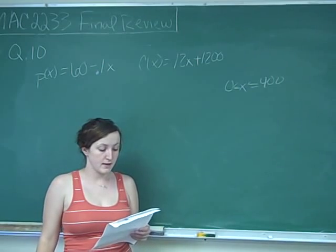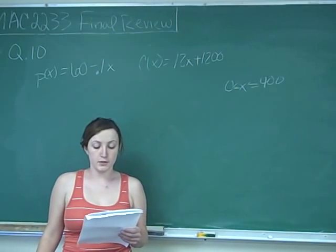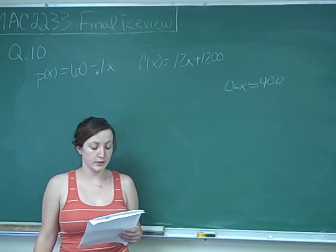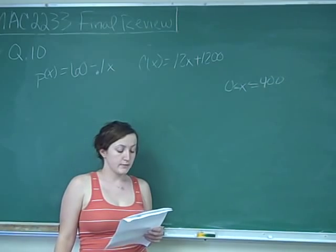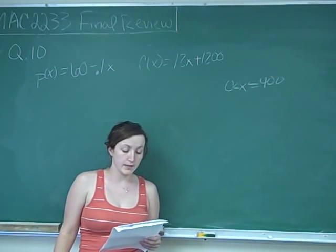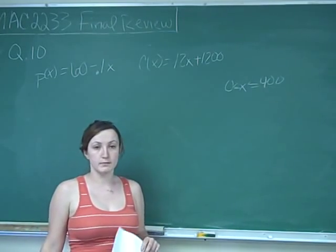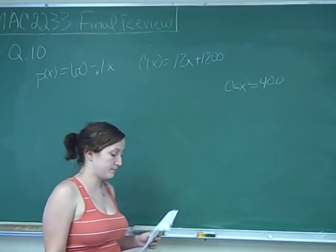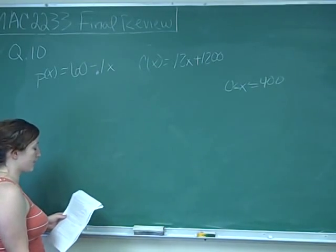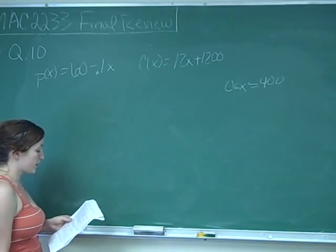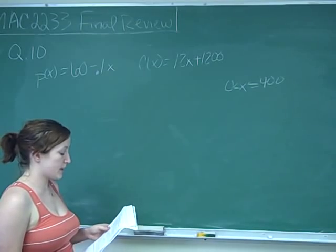This is question number 10. It says the demand and cost functions for a certain product are given by P(X) = 60 - 0.1X and C(X) = 12X + 1,200, where X is between 0 and 400 units. Which of the following statements is not true?